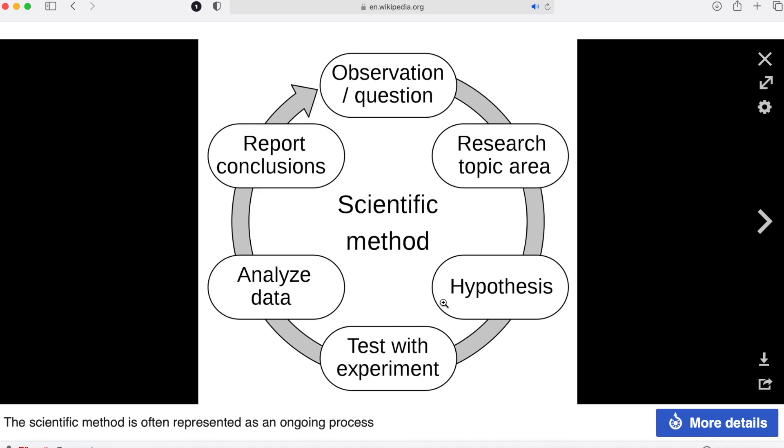Jung had the observation and the question: do people fall into these typological categories? The research topic is Jung's typology, and the hypothesis is: do people actually fall into these categories? This is something that's not been tested.